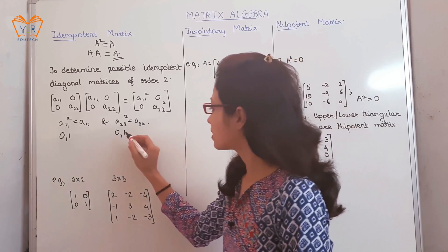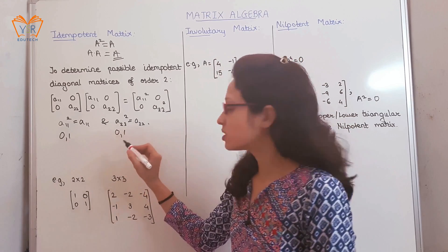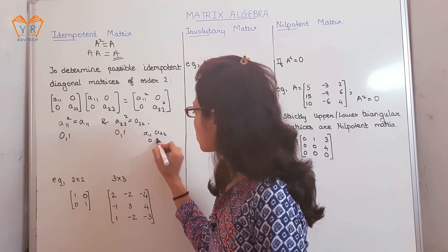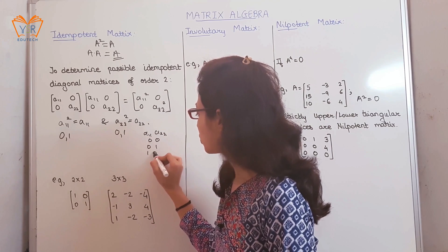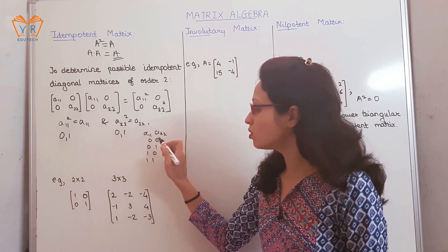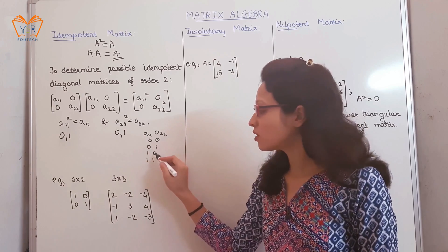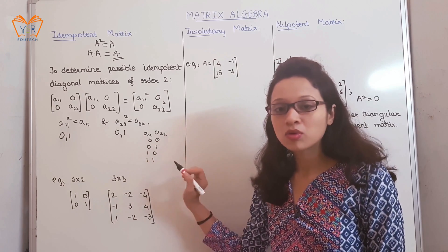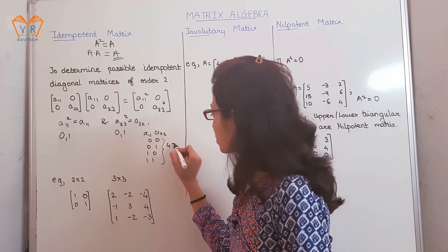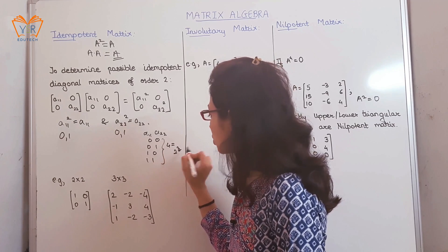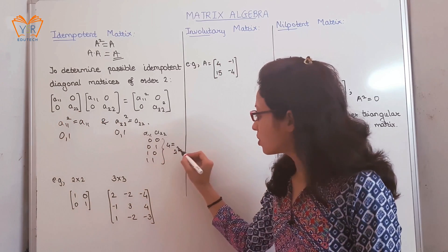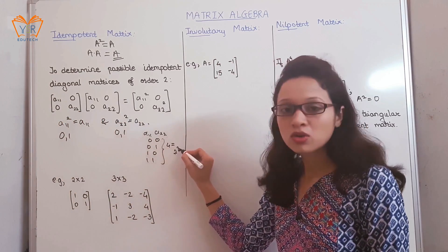This is satisfied only when A₁₁ is either 0 or 1, and A₂₂ is either 0 or 1. So the four possible combinations are (0,0), (0,1), (1,0), and (1,1). That is, both elements can be 0, either one can be 0, or both can be 1. There are four possible combinations, giving 2 raised to 2. So for a 2×2 matrix, the possible combinations are 2².